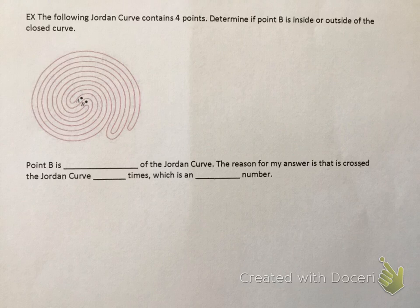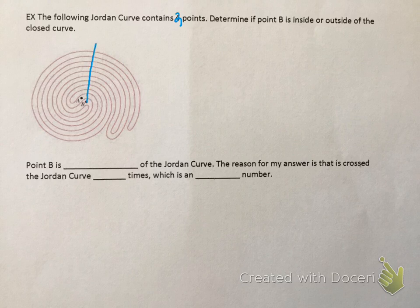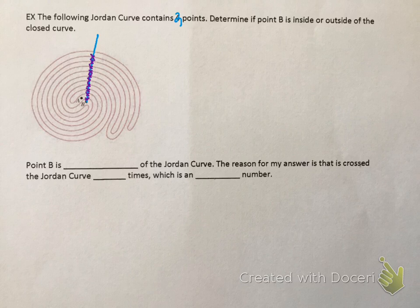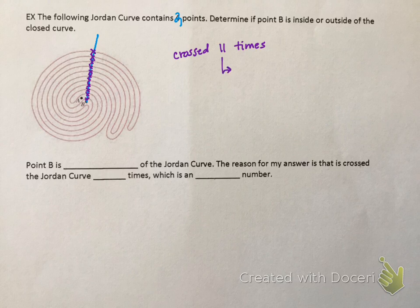After watching the Jordan curve video, we'll do this last bit. The following Jordan curve contains two visible points. To determine if point B is inside or outside the closed curve, draw a line from point B to outside the curve, then count how many times it crosses the curve boundary. In this case it crosses eleven times. Eleven is an odd number, so we can conclude that point B is inside the curve.